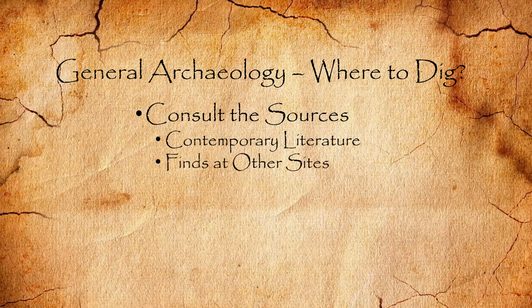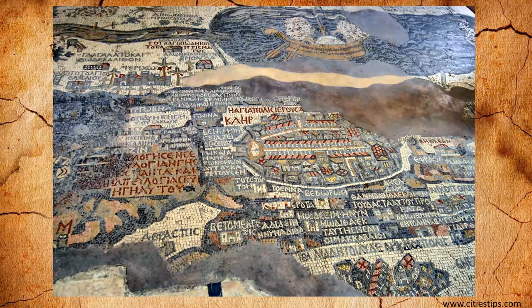Finds at other sites can also indicate where to dig. Here's an interesting site — the Madaba map, which is in Madaba, Jordan. It's a floor mosaic in a Greek Orthodox church, the Church of St. George. It is the oldest or earliest known map that represents the Middle East, dated to about the middle 500s AD. It shows several cities unknown to modern scholars with their traditional ancient names. This isn't an exact map, but it does give a general representation of about where things are.